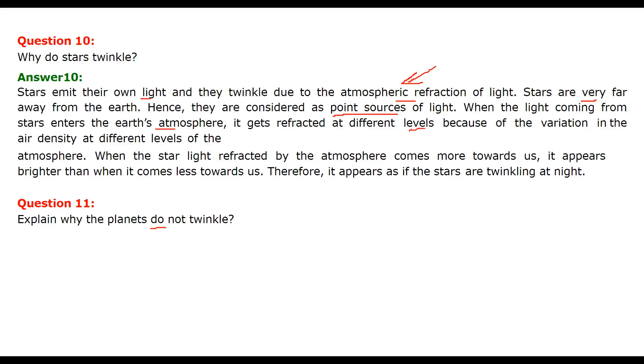Different layers - troposphere, stratosphere, mesosphere, exosphere - because of the variation in the air density, air is different, temperature is different, pressure is different at different levels of the atmosphere. So when the star light refracted by the atmosphere comes more towards us, it will be seen as brightening. It appears brighter than when it comes less towards us. So it appears that the stars are twinkling at night.